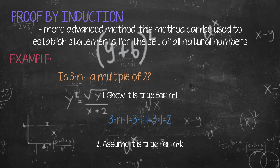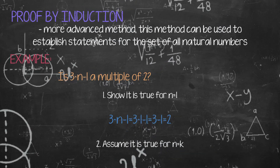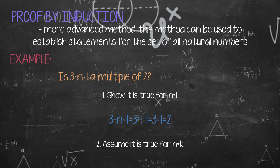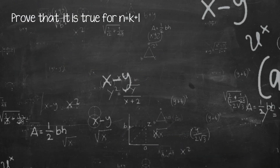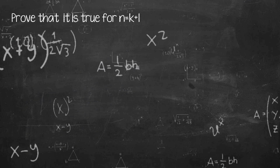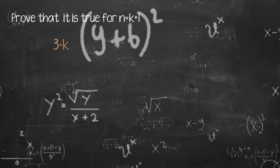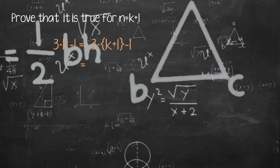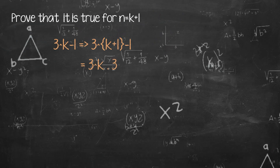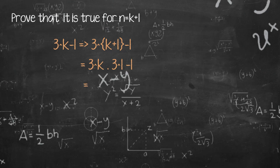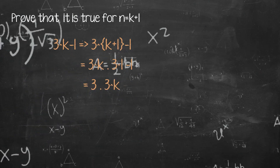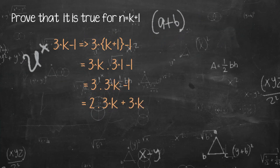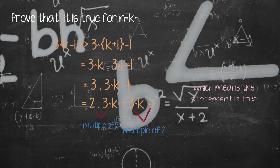For Step 2, assume that n equals k. So, 3 raised to n minus 1 equals 3 raised to k minus 1, which is a multiple of 2. Now prove that it is true for n equals k plus 1. So, 3 raised to k plus 1 minus 1 can be expressed using prior results, and both terms are shown to be multiples of 2.